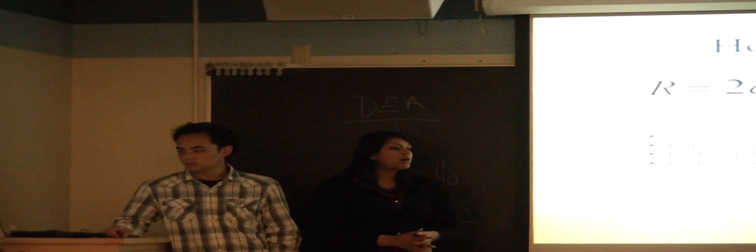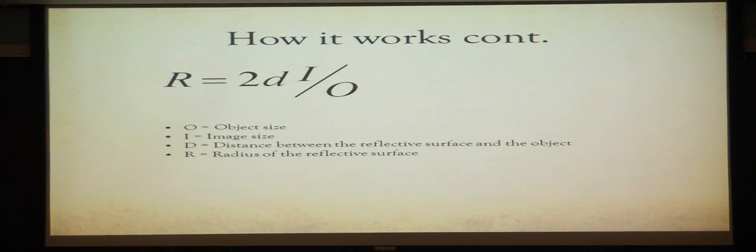The equation that the keratometer uses is this equation right here. There's a relationship between the radius of the reflective surface and the distance between the reflective surface and the object, image size and object size. So to determine three of these four variables, you can actually use one of the two principles, Javal-Schiotz or Bausch and Lomb.